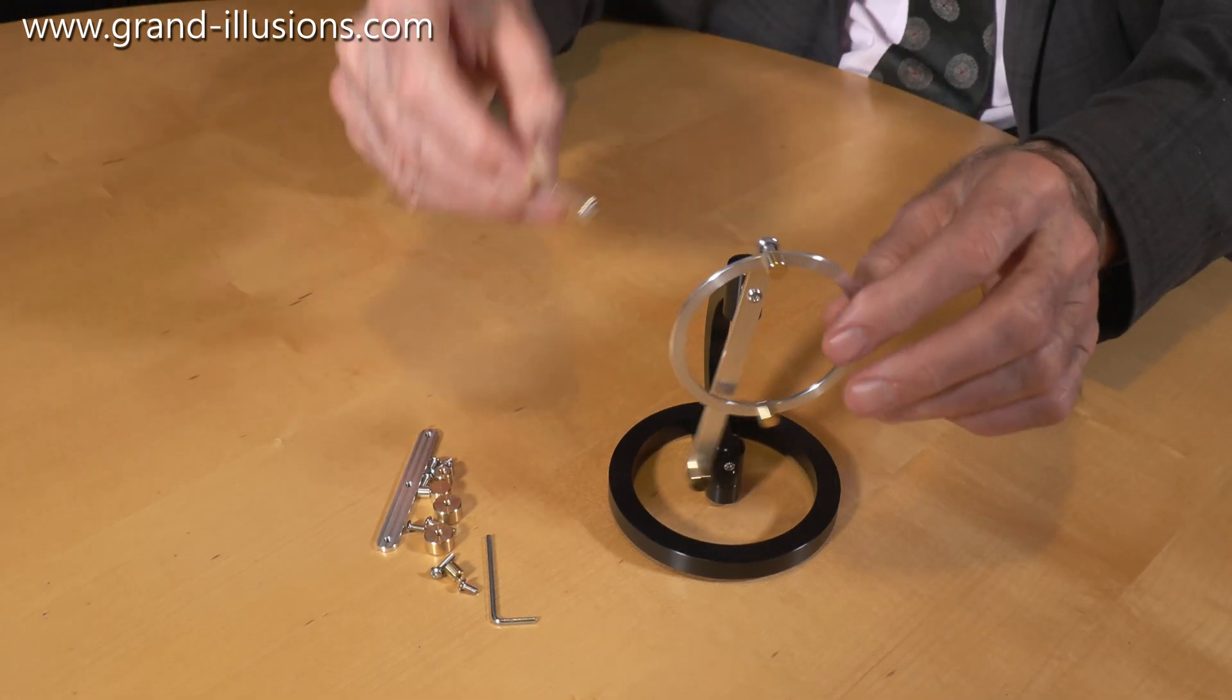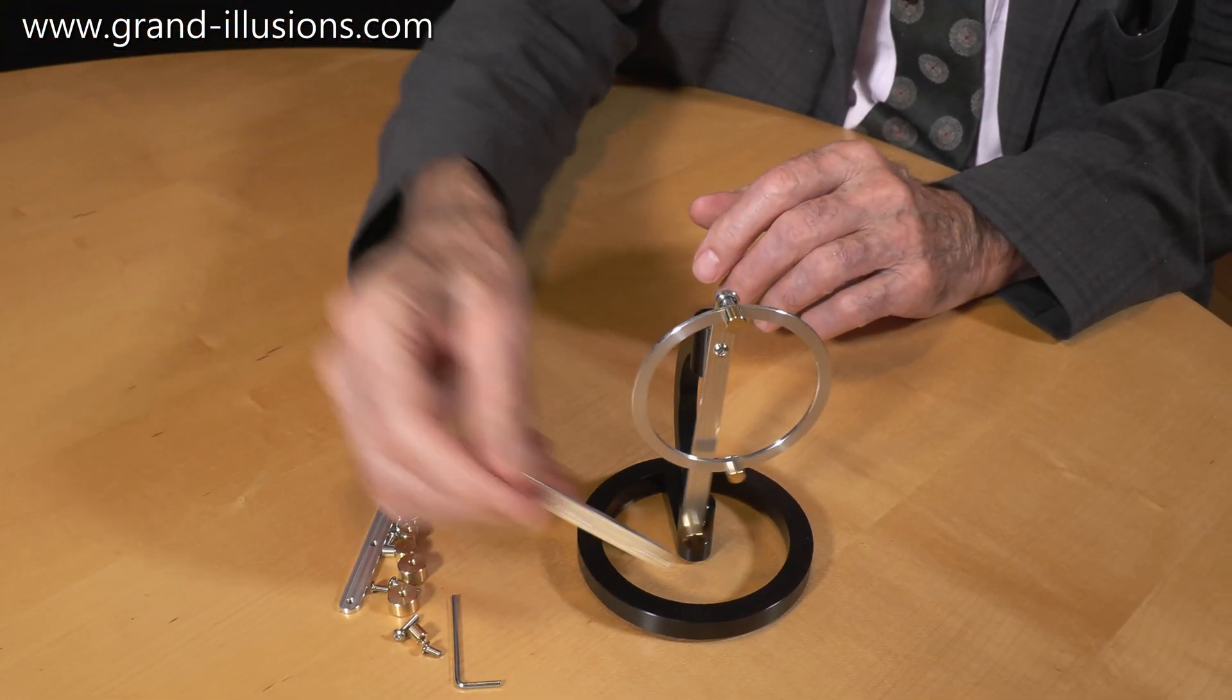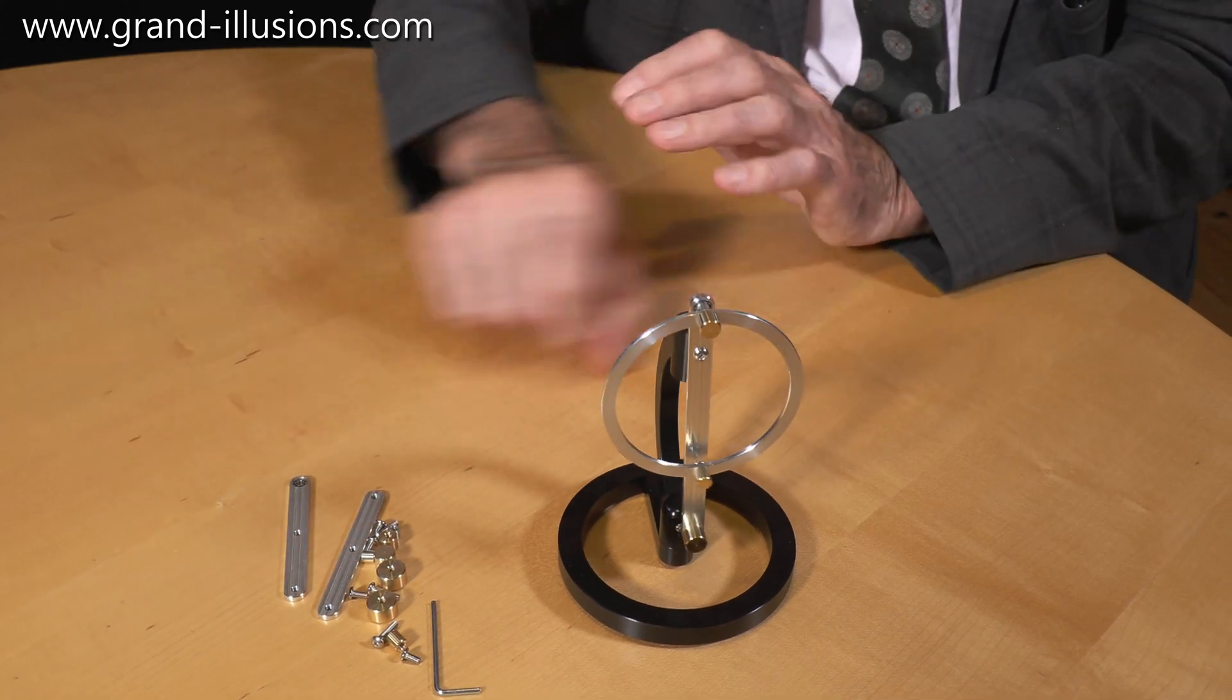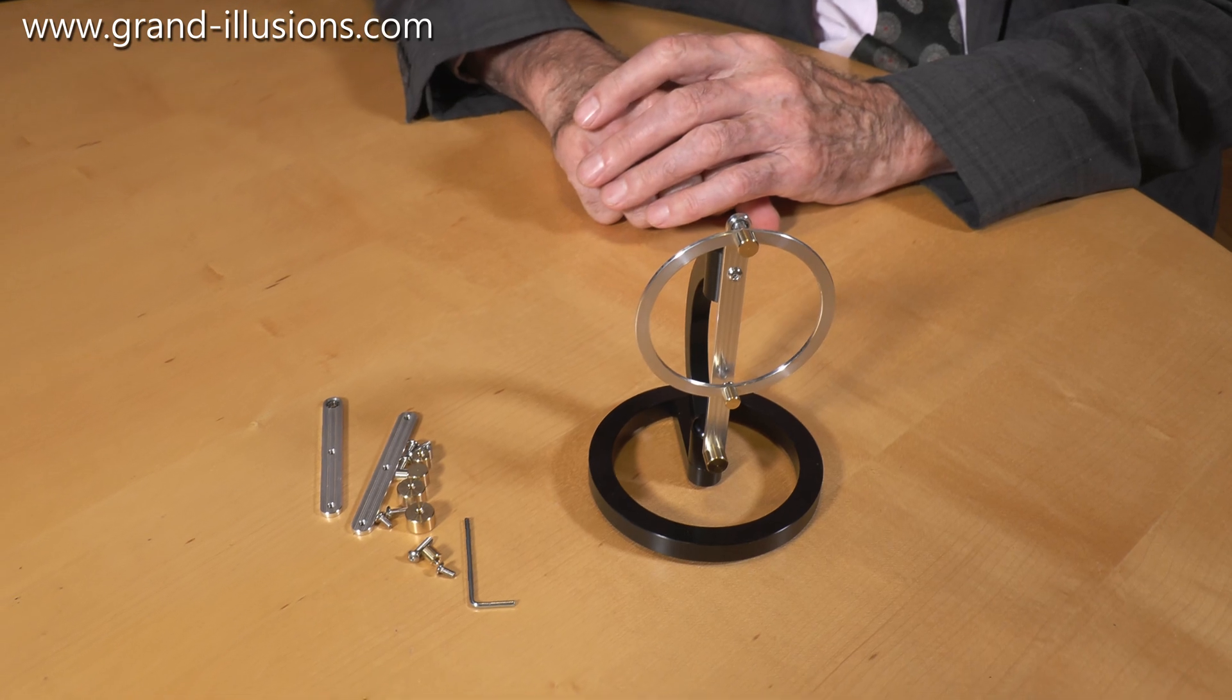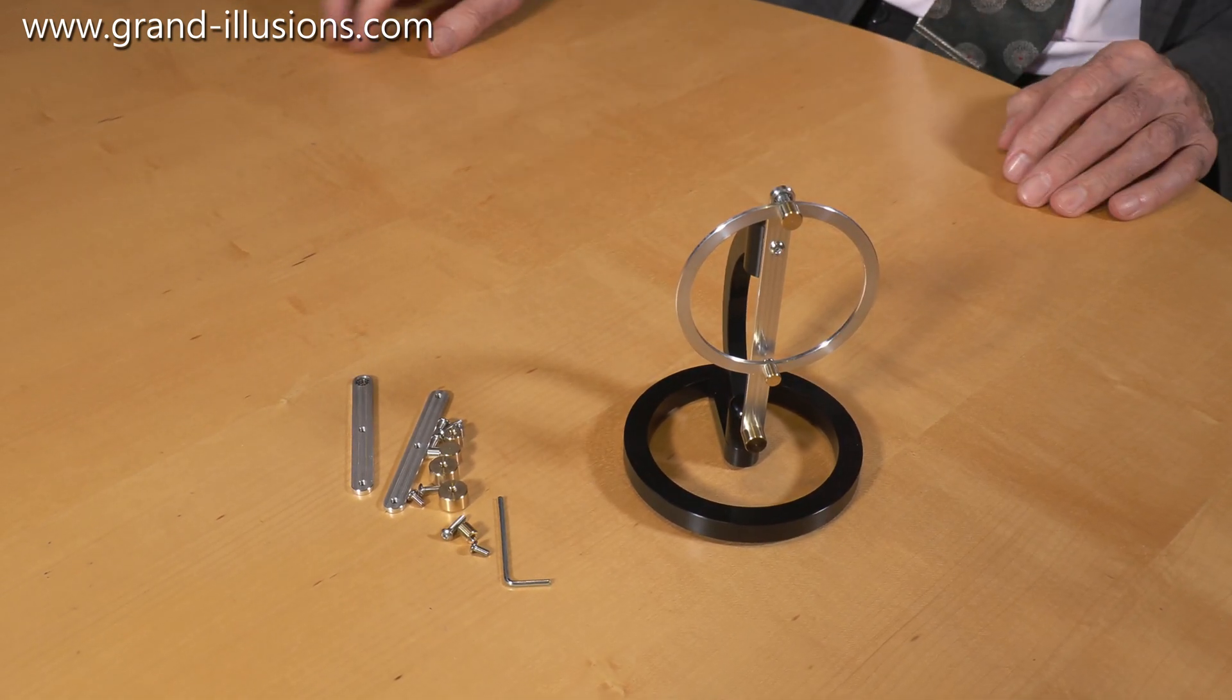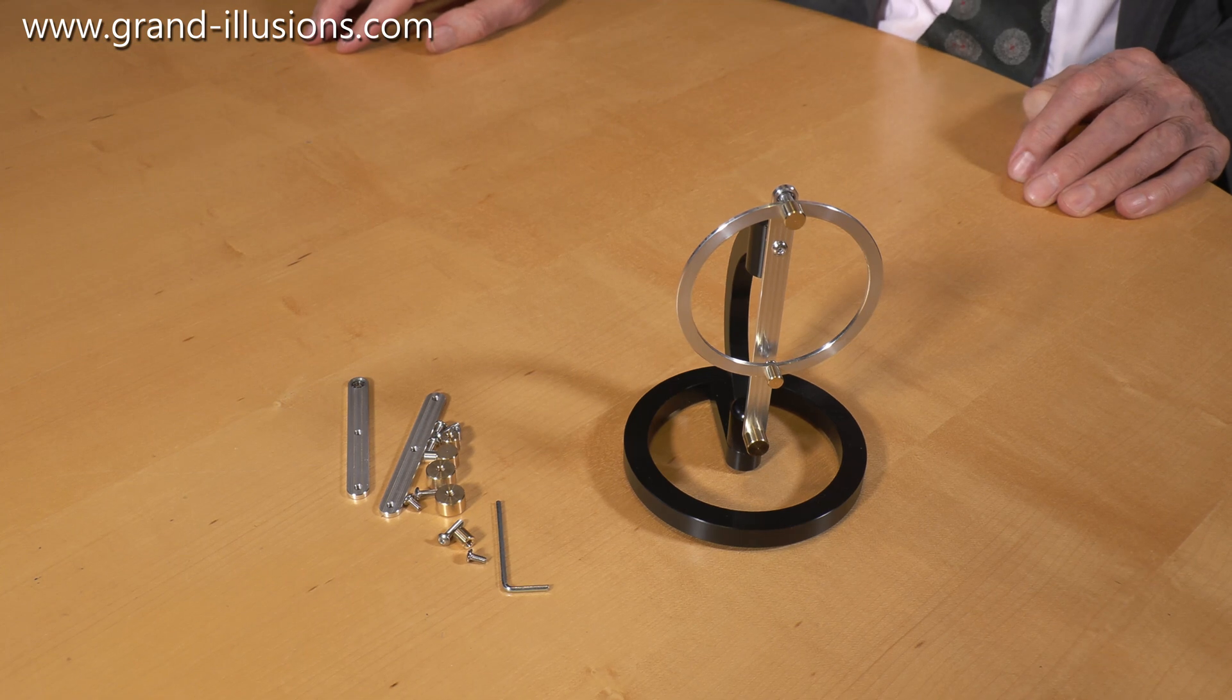Sometimes you take the ring off and put one of these on, sometimes you have the ring and that as well. There's four different distinct ways, and the weights come into it as well, to create four different types of pendulum. So that's the first one. Now we'll show you the second one.